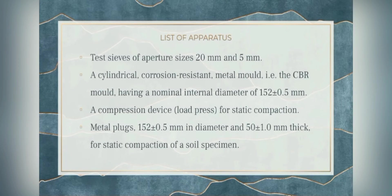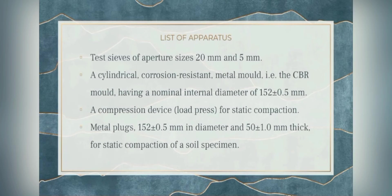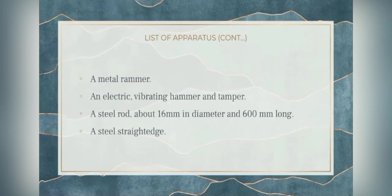The horizontal platens shall be large enough to cover a 150 mm diameter circle and capable of a vertical separation of not less than 300 mm. The device shall be capable of applying a force of at least 300 kilonewtons. Fourth are metal plugs of 152 ± 0.5 mm in diameter and 50 ± 1.0 mm thick for static compaction. A handle which may be screwed into the plugs makes removal easier after compaction. Fifth is a metal rammer, which shall be either the 2.5 kg or 4.5 kg rammer depending on the degree of compaction required.